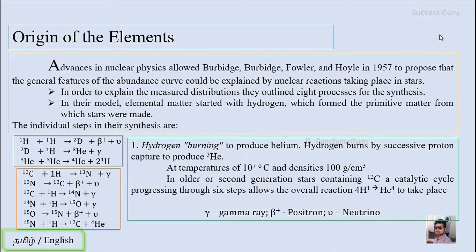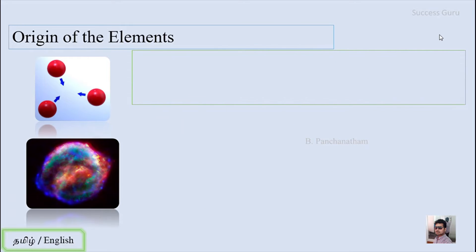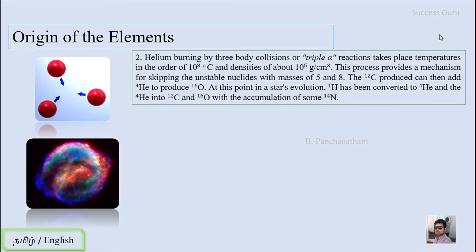The second process is helium burning, or three-body collision, or simply triple-alpha reaction. This takes place at temperatures in the order of 10^8 degrees Celsius and density of 10^5 grams per centimeter cubed. This process provides a mechanism for skipping the unstable nuclei with mass of 5 and 8. The carbon-12 produced can add helium to produce oxygen-16. At this point in stellar evolution, hydrogen has been converted to helium, and helium into carbon and oxygen, with accumulation of some nitrogen.